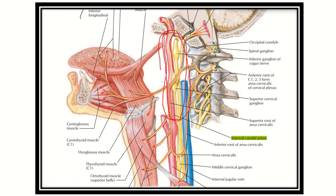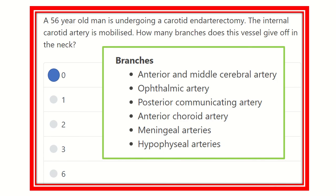From its origin up to the base of the skull, the internal carotid artery gives no branches. Its branches — the anterior and middle cerebral arteries, ophthalmic artery, posterior communicating artery, anterior choroidal artery, and some meningeal and hypophysial arteries — are all located in the cranial cavity, not in the neck. So the correct answer is zero branches in the neck.